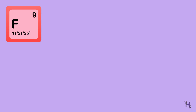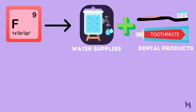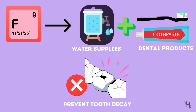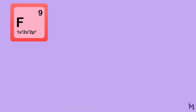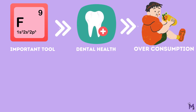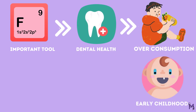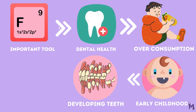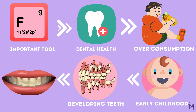By now, we have understood that fluoride is a naturally occurring mineral that is commonly added to water supplies and dental products to help prevent tooth decay. While fluoride is an important tool in dental health, excessive consumption during early childhood when teeth are developing can lead to dental fluorosis, which can cause white or brown spots and streaks on teeth.